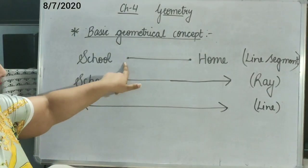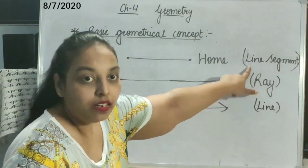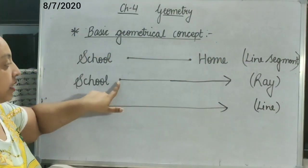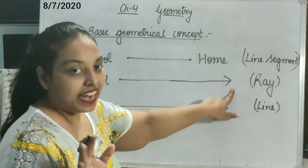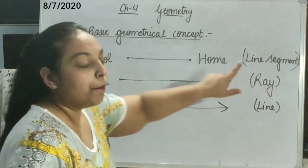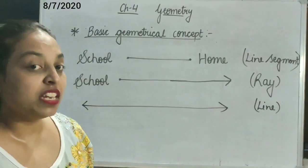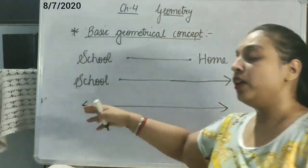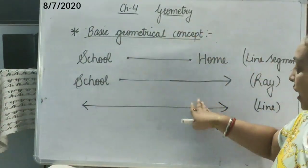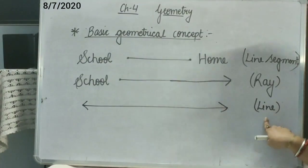So to summarize: if we have a starting point but not an ending point, it is a ray. But if we are not having any endpoint at all — zero end points, neither a starting point nor an ending point — this is a line.